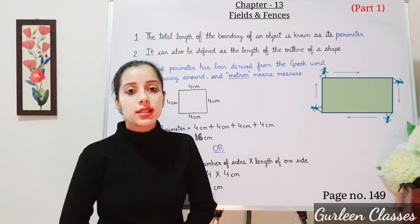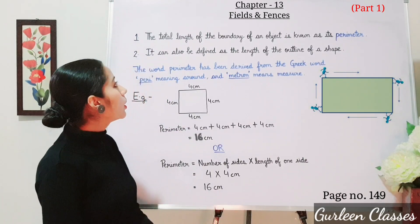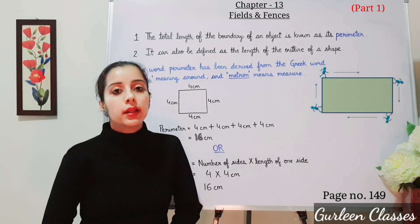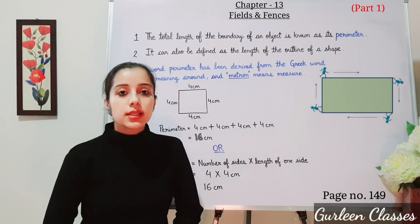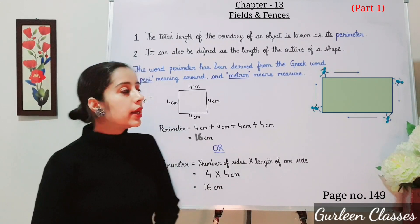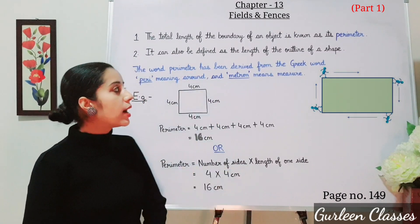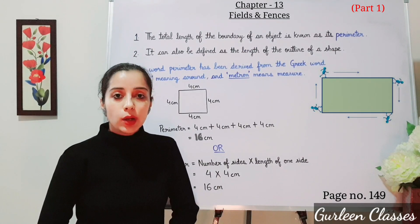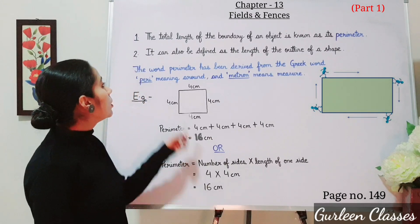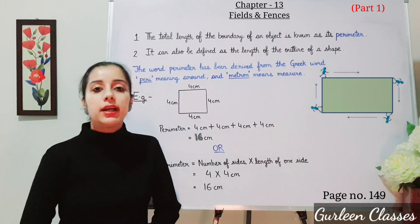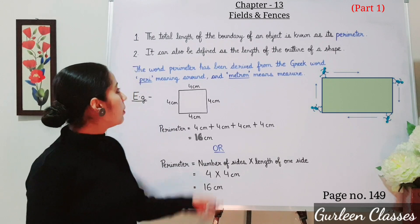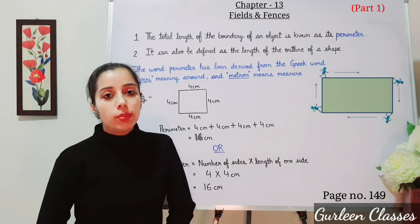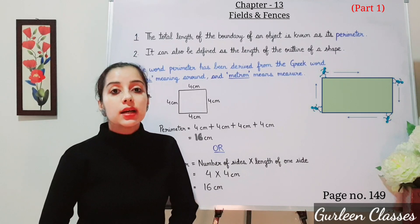First let us see what is a perimeter. The total length of the boundary of an object is known as its perimeter. It can also be defined as the length of the outline of a shape. The word perimeter has been derived from a Greek word — peri which means around, and metron which means measure.